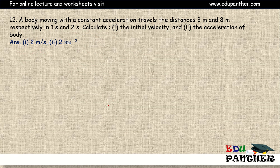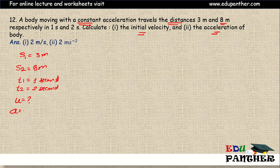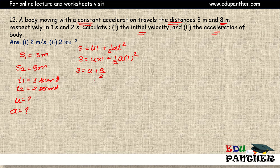Question 12: a body moving with constant acceleration travels a distance of 3 meters and 8 meters in time intervals of 1 second and 2 seconds respectively. We have two displacements s1 = 3 meters and s2 = 8 meters. We clearly need to use two different equations and solve them together. Starting with s = ut + ½at²: for the first case, s = 3 meters.